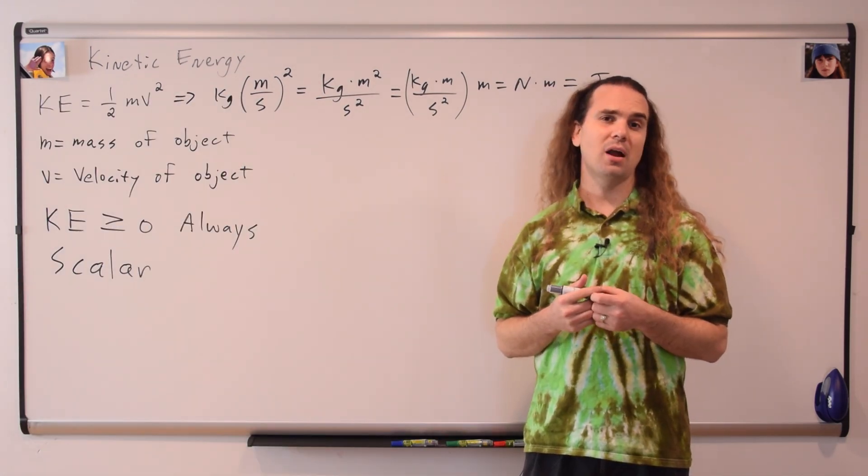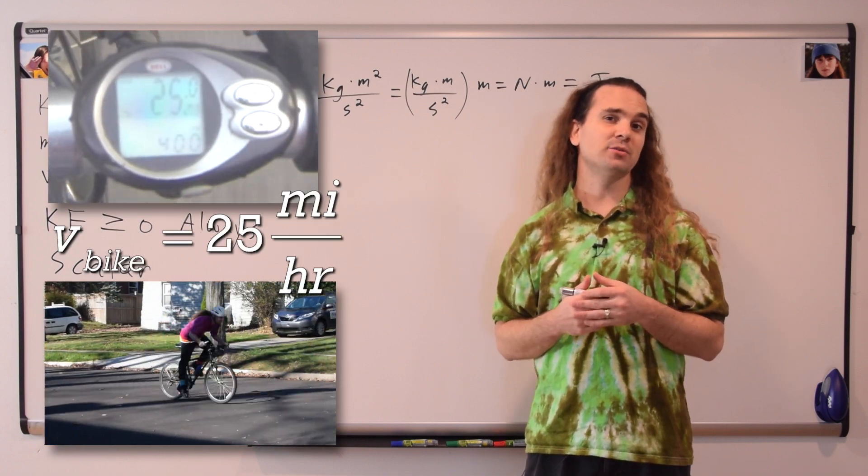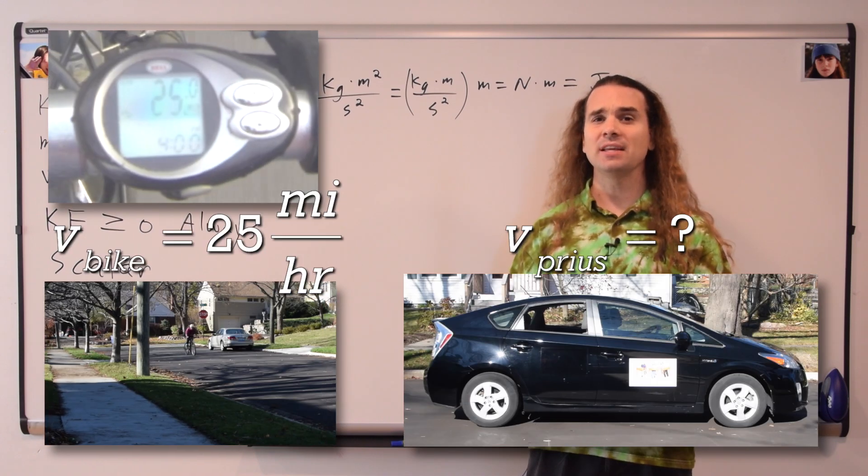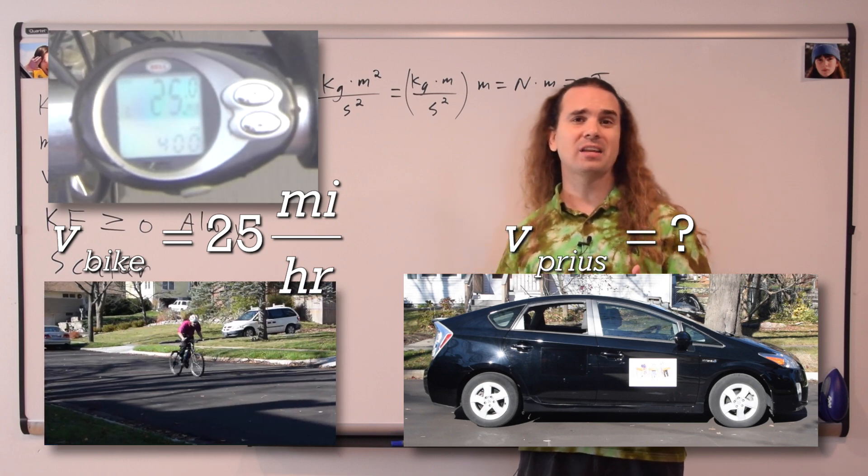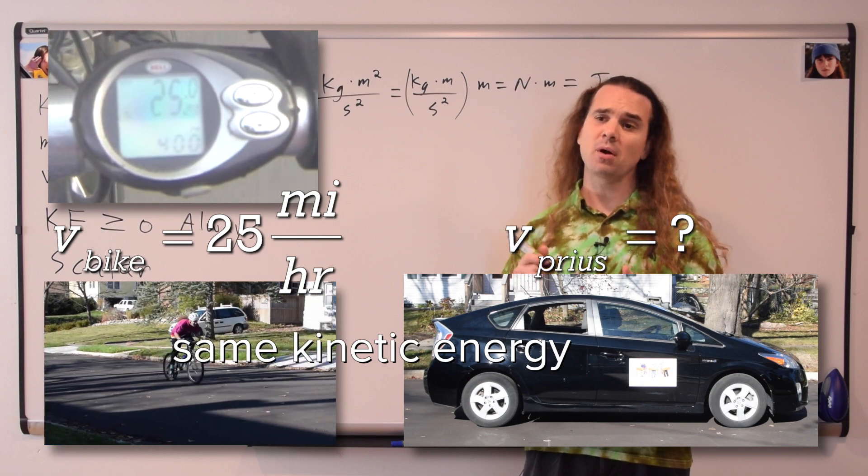Let's do a short example problem. Let's say I am riding my bike at 25 miles per hour. How fast would I need to drive my Prius in order to have the same amount of kinetic energy? Bo, please solve this problem.